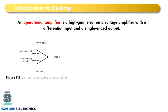First we need to understand what is op-amp. Op-amp is an operational amplifier. It gives high gain with a differential input and single-ended output. There are two input terminals and only one output terminal in the diagram, along with two power supplies. We can apply two voltages and expect the difference between them to be amplified as output.